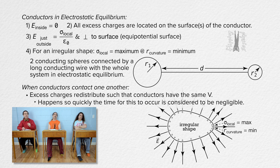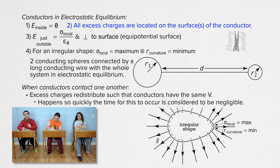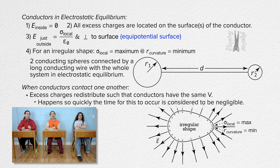Both conductors have the same electric potential because all the charges are on the surfaces of the conductors in electrostatic equilibrium, and the surfaces of conductors in electrostatic equilibrium are equipotential surfaces. So when two charged conductors touch one another, the excess charges redistribute themselves to make it so both conductors are at the same electric potential.